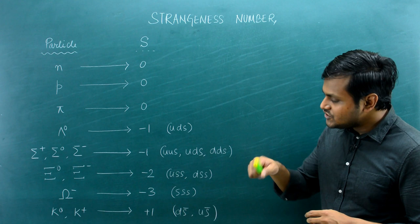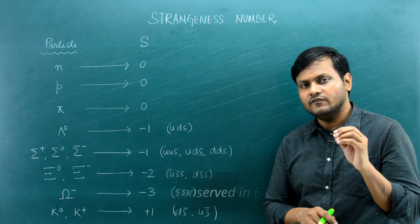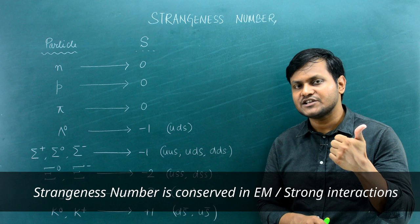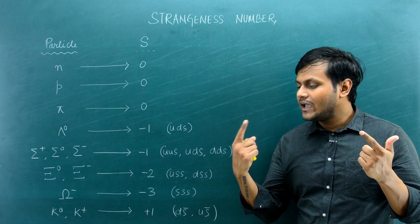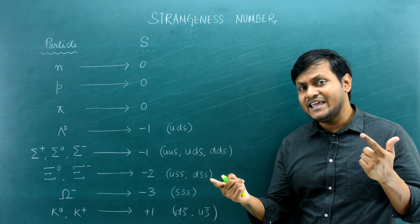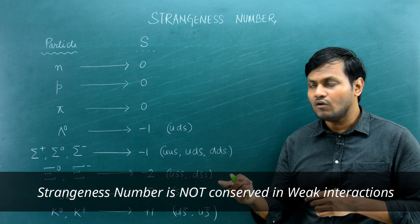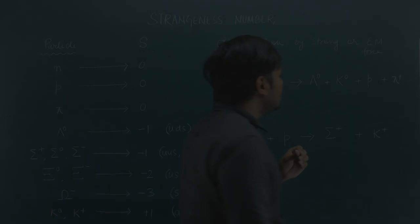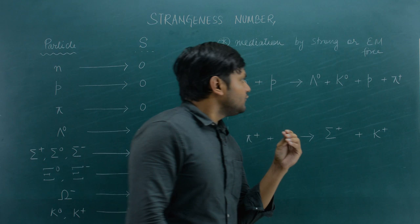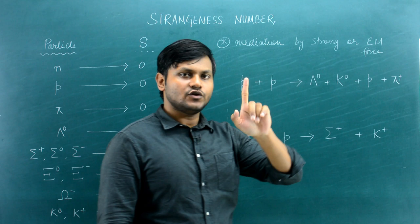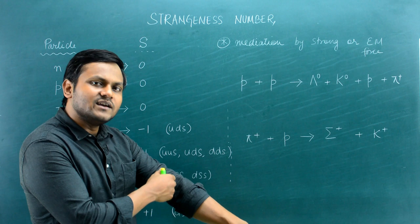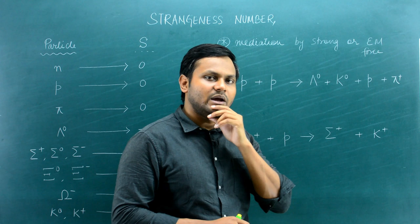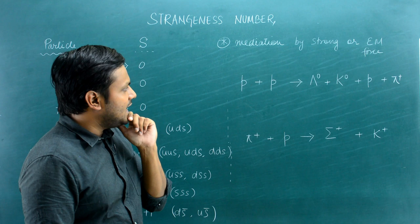The strangeness quantum number is conserved only in interactions mediated by either the electromagnetic force or the strong force. In decay processes involving weak interaction, the strangeness number is not conserved. For example, in a proton–proton collision (strong interaction) producing a lambda naught, a K0 meson, a proton, and pions: the baryon number is conserved (2 = 2) and the strangeness number is also conserved (0 = −1 + 1 = 0).